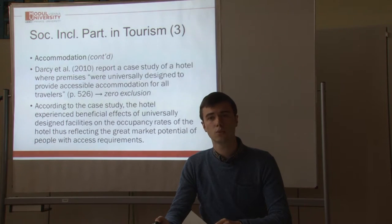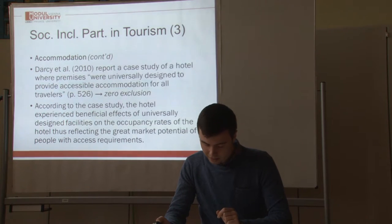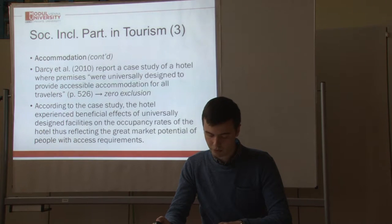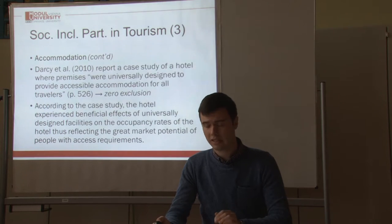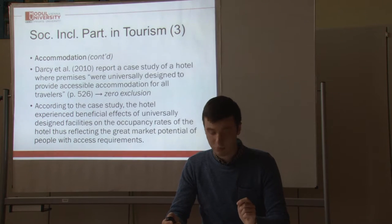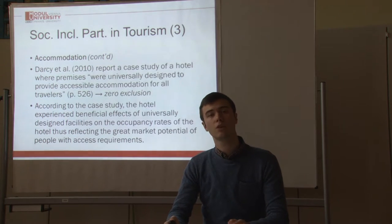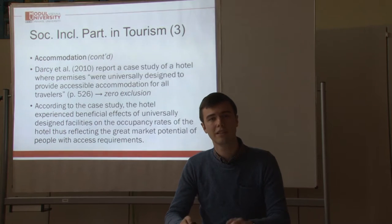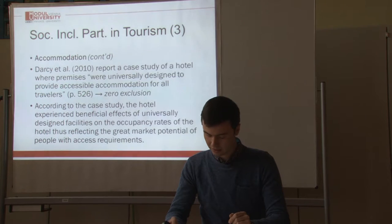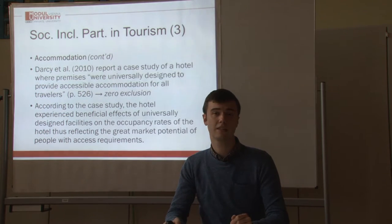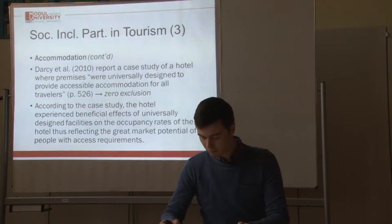There are other cases as well. Darcy and colleagues in 2010 reported a case of a hotel where premises were universally designed to provide accessible accommodation for all travelers. That meant not only the rooms — in this case cabins — were created in an accessible way, but also other facilities such as travel paths, a performance stage, barbecue area, conference rooms and spa facilities. According to this case study, the hotel owners actually experienced benefits in occupancy rates as a result of these changes.